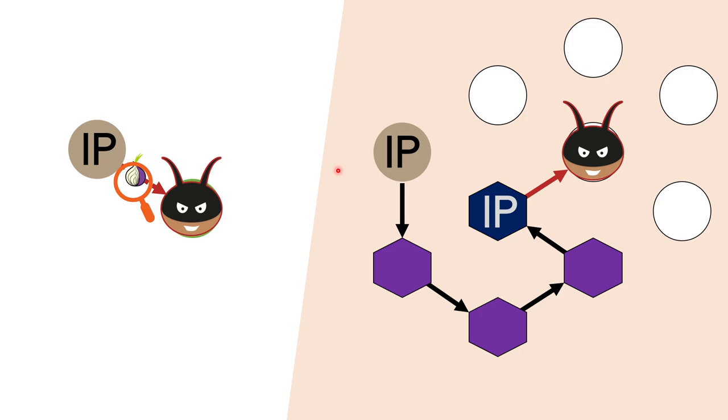So instead of you directly sending a transfer from your node directly to the attacker's node, if you're using an anonymizing network such as Tor, you will instead first send the transaction broadcast through these Tor relay nodes. And then finally, you'll get to a Tor exit node, which will then finally send the transaction broadcast to the attacker node. Well, in this case, the IP address that the attacker learns is not your IP address. They learn the IP address of the exit node, which of course has no relation to you.